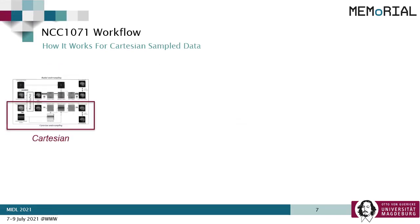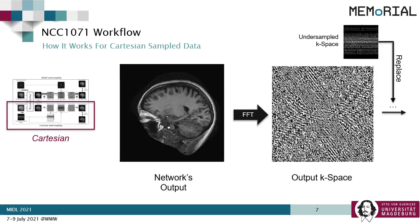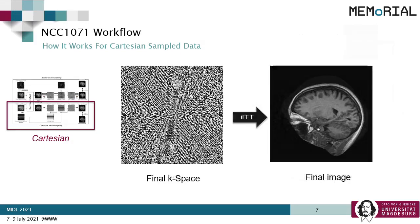Now let's have a look at the Cartesian workflow, which is quite similar to the radial one. Inverse fast Fourier transform is applied on the under-sampled K-space to obtain the under-sampled image, which goes as input to the network. Once the network provides its output, fast Fourier transform is applied to obtain the output K-space. The originally acquired K-space lines from the under-sampled K-space are then replaced in this output K-space to obtain the final K-space. Inverse fast Fourier transform is applied to obtain the final image, which is the final output of the NCC1701 framework.